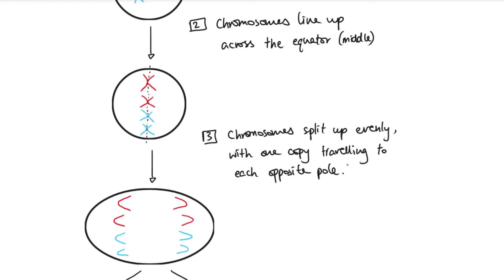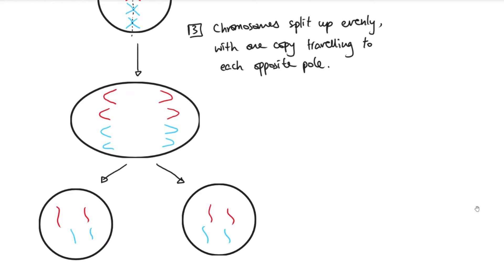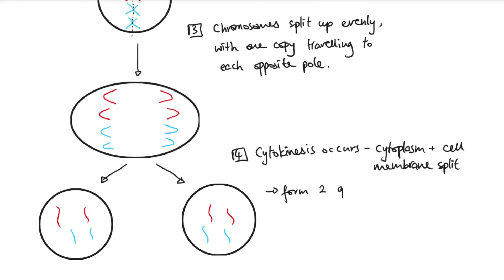The chromosomes split up evenly, traveling to opposite poles. Then, in the fourth step, the cell splits into two daughter cells through cytokinesis — the cytoplasm and cell membrane split apart. The key thing to remember is that you must say there are two genetically identical daughter cells. Many students say 'two identical daughter cells' but that doesn't emphasize that it's the DNA that is identical. You must say 'two genetically identical daughter cells,' or that the two daughter cells have the exact same copy of DNA.